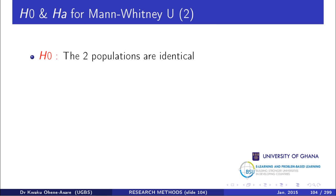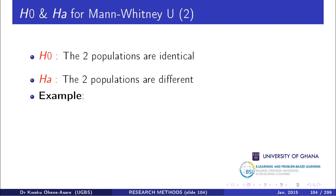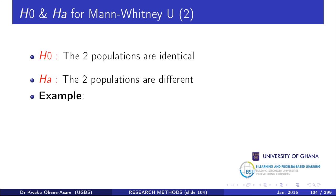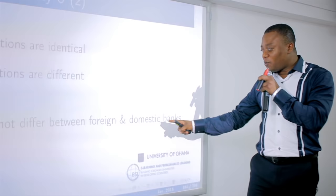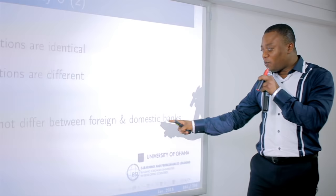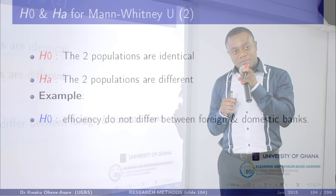When the null states the two populations are identical, the alternative obviously says they are not identical — they are different. For a practical example: the null statement says efficiency does not differ between foreign and domestic banks. What would the alternative be?